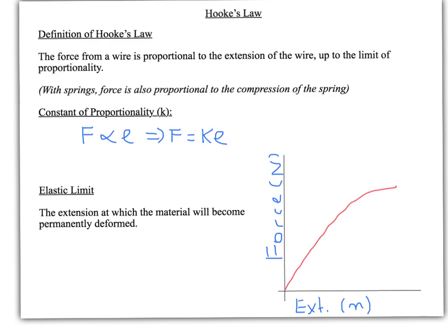So writing that in equation form, F is proportional to E, where little E is the extension of the wire, which can be written as F equals KE.